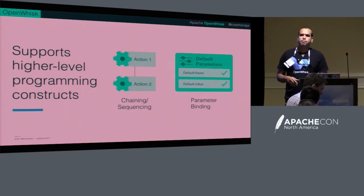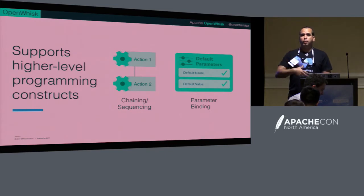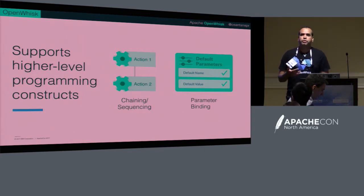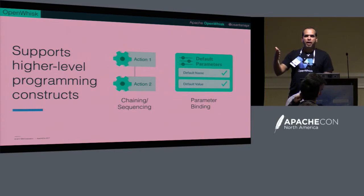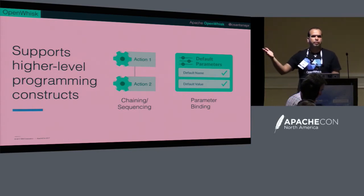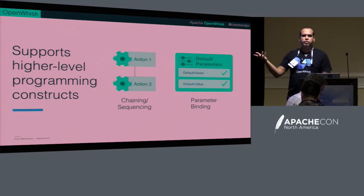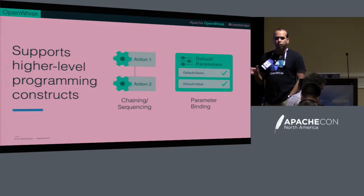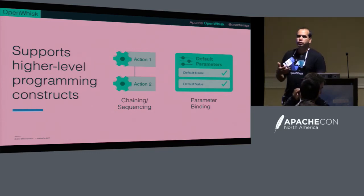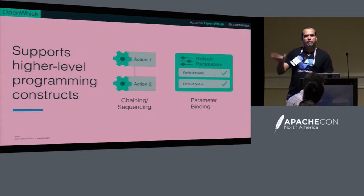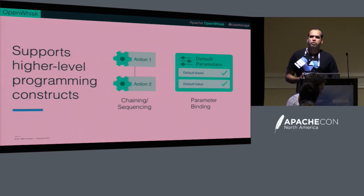We also support sequences. You can have an action developed by you or someone else — you may not know their programming language — but they give you an action to talk to GitHub or Slack. We have system actions. You chain them as a sequence: an action takes JSON input, outputs JSON, and the parameters match to the next action. I think we have a limit of 10, but in the open source version you can change those settings. Another aspect is parameter binding — default parameters set in your action, often used for credentials or API keys that you don't want in your source code on GitHub.